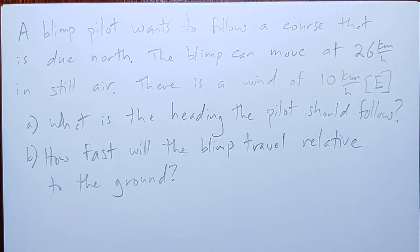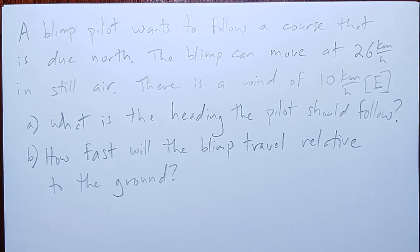A blimp pilot wants to follow a course that is due north. The blimp can move at 26 kilometers an hour in still air. There is a wind of 10 kilometers an hour to the east. What is the heading the pilot should follow, and how fast will the blimp travel relative to the ground?